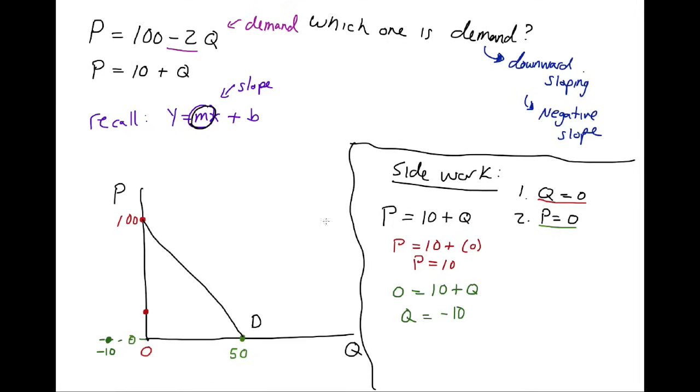So what that means is that it would come down like this, but we don't really care about this. I'll make it dotted. We really want to start here and just be upward sloping, and that's our supply curve.